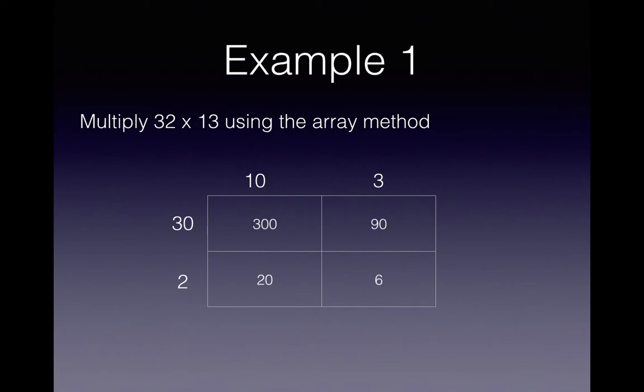Now when you add together the total area, that's the 300, the 90, the 20 and the 6, that gives you the answer of 416 which is the same as multiplying 32 by 13 on a calculator.